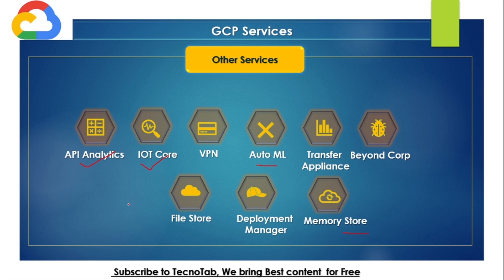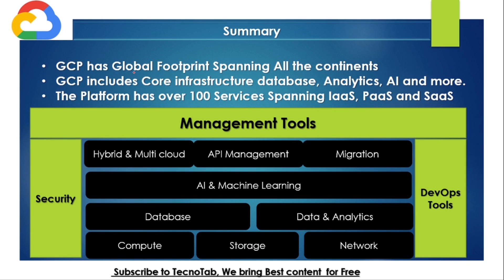GCP offers more than hundreds of services in total. In this course, the focus is on the critical building blocks of GCP. To summarize this section: we covered the Google Cloud Platform's global footprint — regions, zones, and edge locations — the core components like compute, storage, and network, and the platform's hundreds of services spanning IaaS, PaaS, and SaaS. We also walked through security tools, DevOps tools, and management tools — all of which we will explore in detail throughout this course. That concludes the first session of this tutorial.